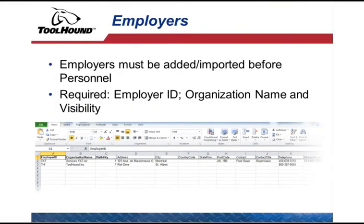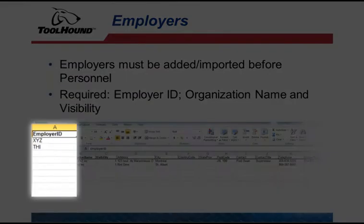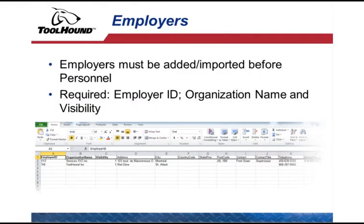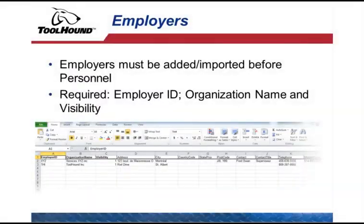As covered in the Core Principles video, employers and personnel — both supervisors and subordinates — make up the framework in ToolHound. Employers must be imported before personnel, and supervisors must be imported before their subordinates. The required columns for the employer spreadsheet are the Employer ID, the Organization Name, and the Visibility, which is the ID of the highest point in the location hierarchy.